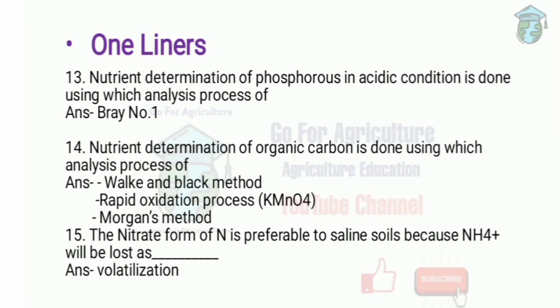Nutrient determination of phosphorus in acidic condition is done using the Bray number one method. It is a very famous process for determining phosphorus in acidic conditions. If the phosphorus is in neutral or alkaline condition, we use the Olsen's method.